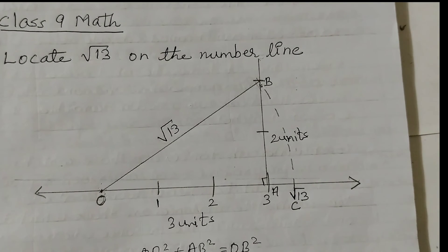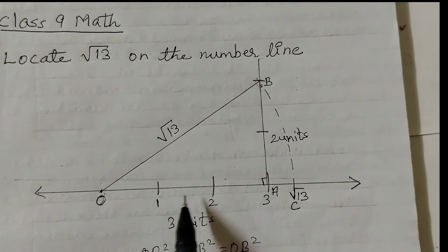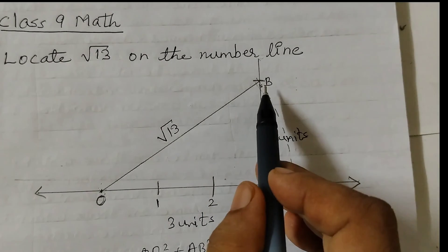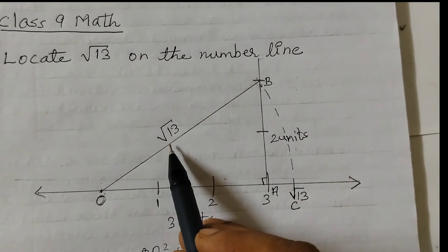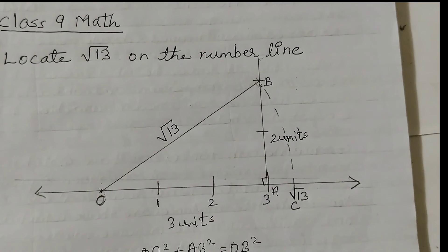Please note that we can also take OA as 2 units and AB as 3 units and draw square root of 13 the same way. That's all for now. See you all in the next video.